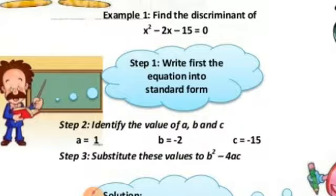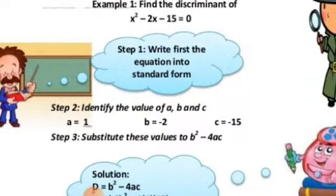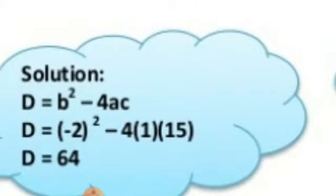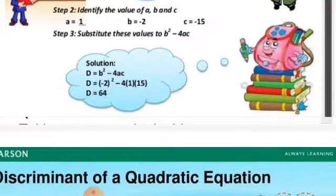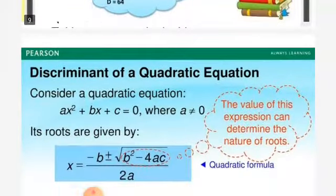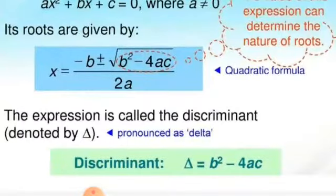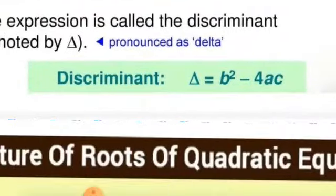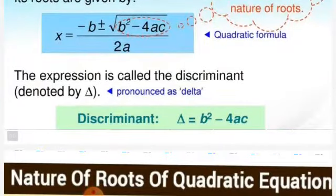For an equation like x² minus 2x minus 15: a equals 1, b equals minus 2, and c equals 15. The discriminant is b² minus 4ac. We put the discriminant formula and the values in, and the discriminant becomes clear. We can represent the discriminant with the delta sign — delta is the discriminant — and the formula is b² minus 4ac, where a, b, and c are involved.